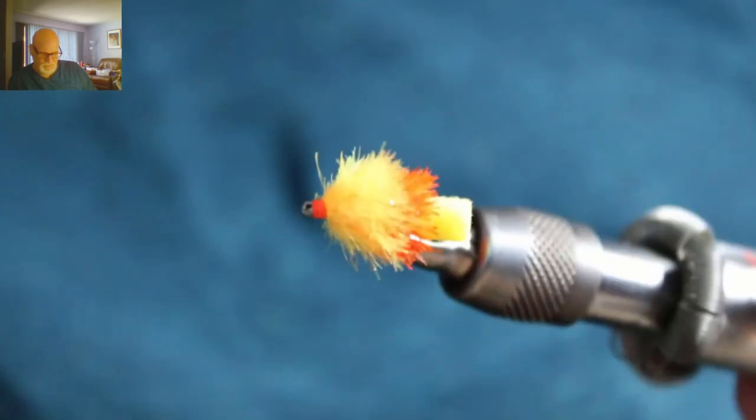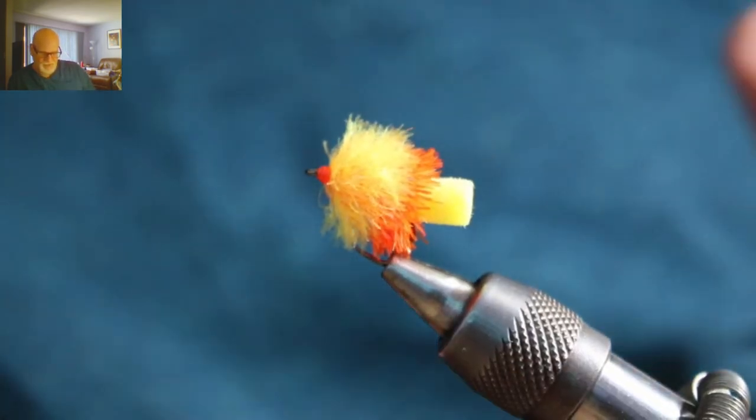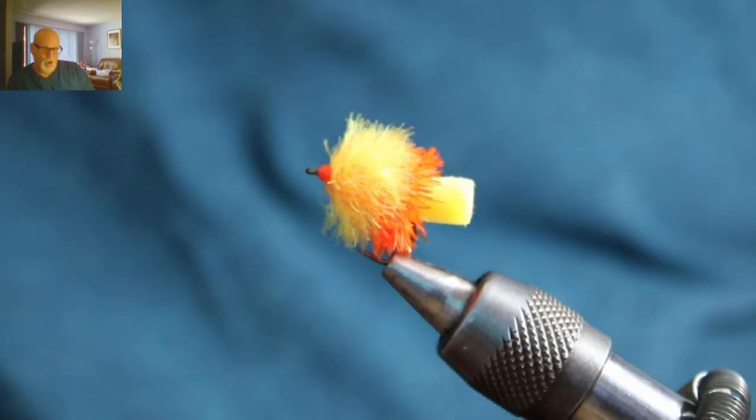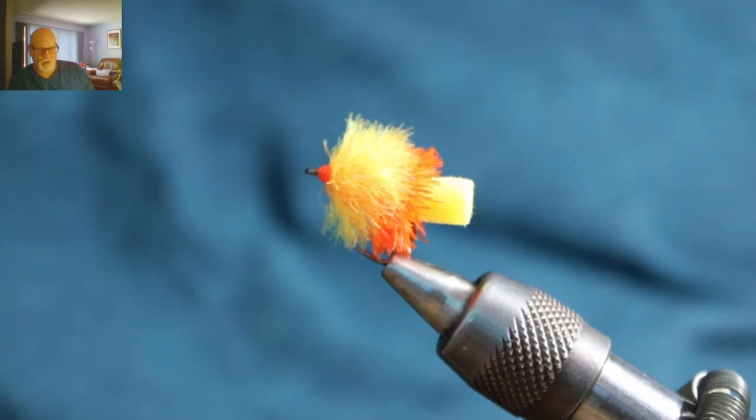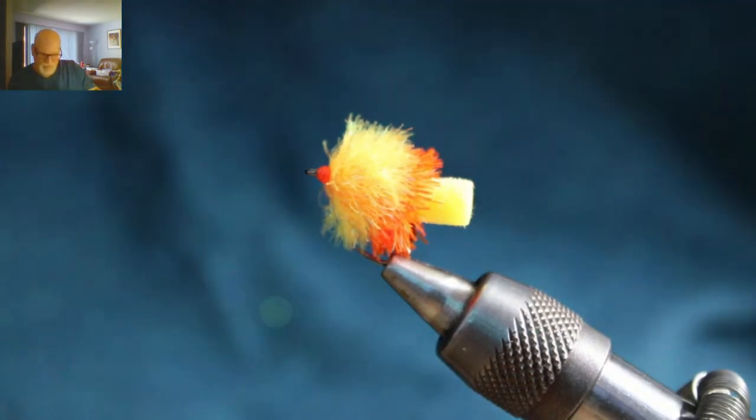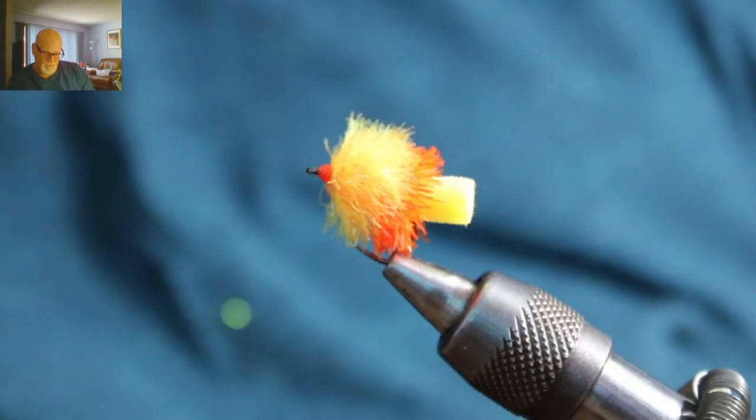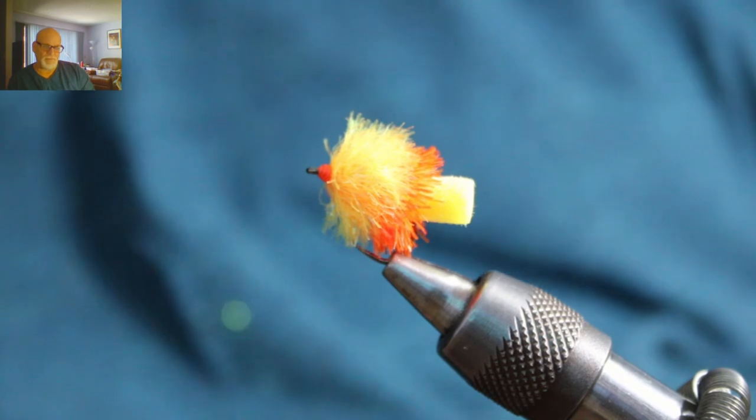They do represent Daphnia really well, the Daphnia bloom or whatever you want to say. Some people call it a Daphnia bloom, but it's when the Daphnia get together in these big blobs and that's why these are called blobs. Because the Daphnia get together in these big blobs and quite often when you see Daphnia in a throat sample of the fish and it's been slow fishing, fire one of these things on, they do work really well.